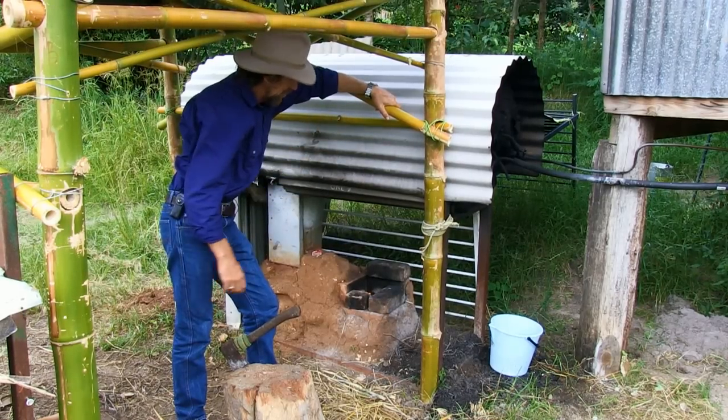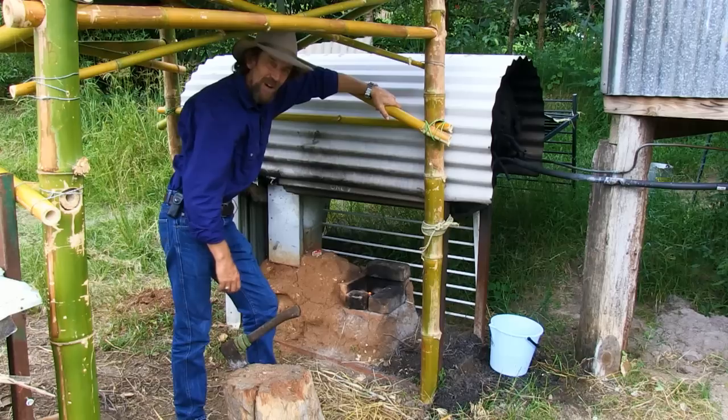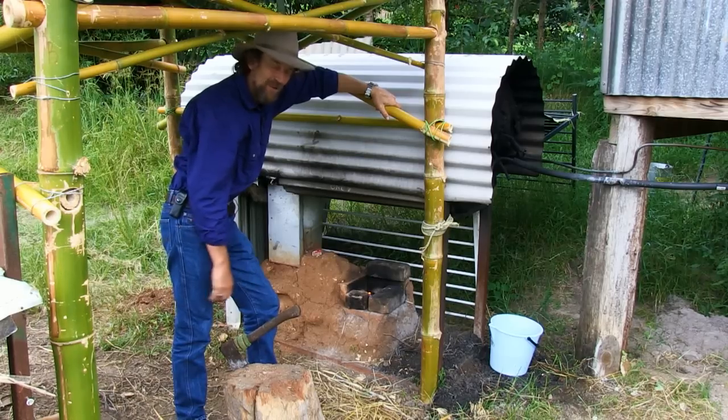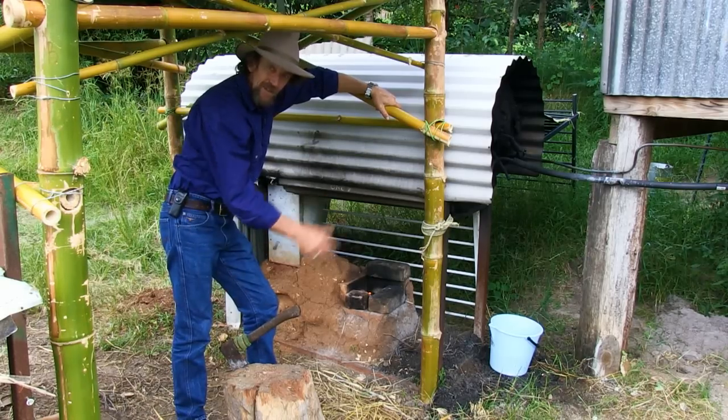This rocket stove setup is pretty much a rough and ready campsite farm model made out of mostly recycled material.